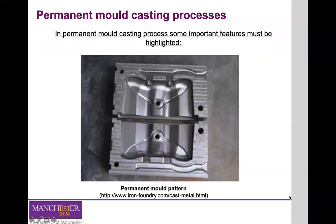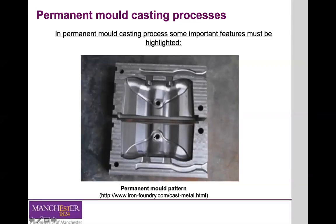Another important difference compared to sand casting is that all the features of the molds — including the runners and the mold cavity — are manufactured inside the mold using, for example, CNC machining. The only part that is normally not directly manufactured in the mold cavity are the cores. Cores are manufactured independently and then, if needed to create cavities, are placed and fixed inside the mold cavity.